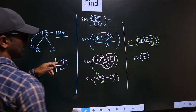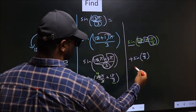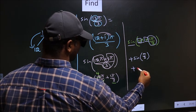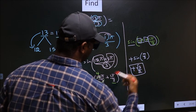In the first quadrant, sine is positive. So put plus. So plus sine π by 3 is root 3 by 2. So this is our answer.